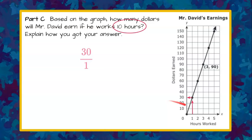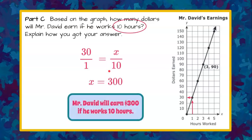I know from my graph that when he works one hour he gets $30. So that's our unit rate and it's also a ratio: $30 in one hour. I can use this to find out x amount in 10 hours. Cross product property: 1 times x is x, 30 times 10 is 300. So I can conclude that Mr. David will earn $300 if he works 10 hours.